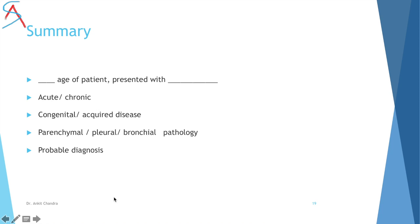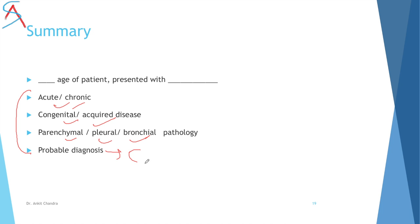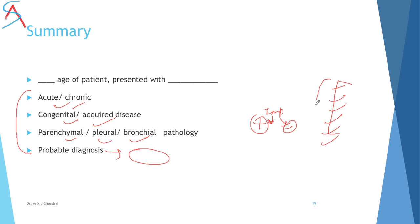In the end, provide a summary: mention the patient's age and gender, the presenting complaints, and overall findings. In the summary, indicate whether the disease is acute or chronic, congenital or acquired, and whether you suspect parenchymal, pleural, or bronchial disease. If possible, give a probable diagnosis based on the history, highlighting important positive symptoms and important negative history to narrow the diagnosis to two or three diseases.